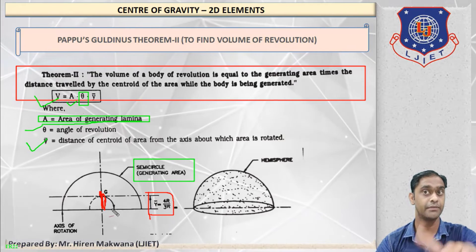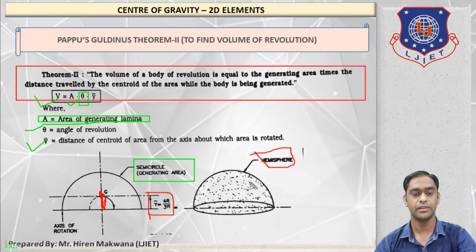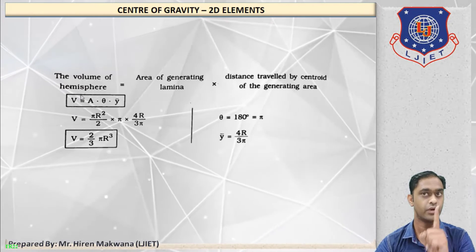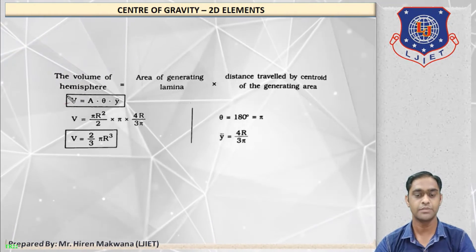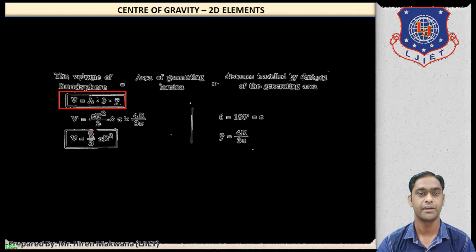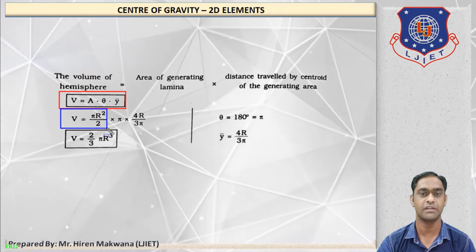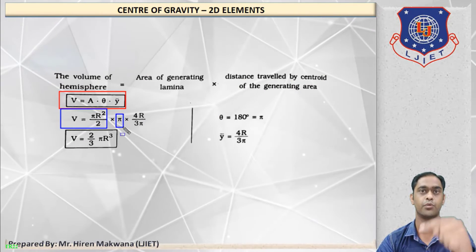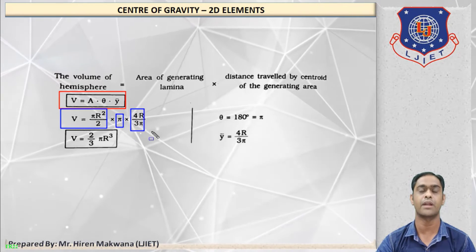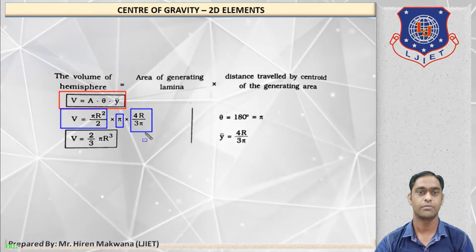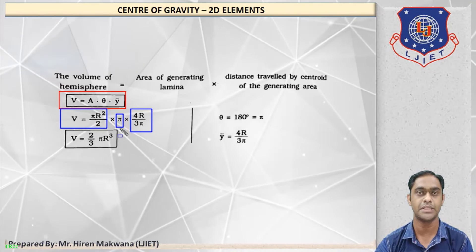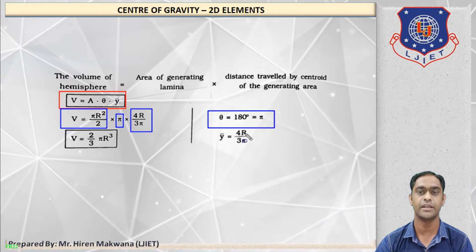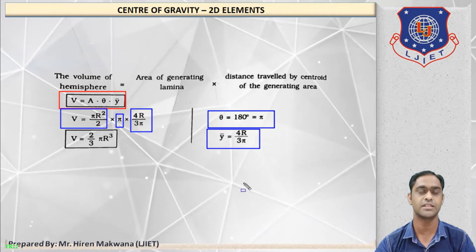If we revolve the semi-circular area up to 180 degrees (π radians), we will get a hemisphere. Applying the formula V = A·θ·ȳ: A = πr²/2, θ = π (180 degrees), and ȳ = 4r/3π. By simplification, the volume of the hemisphere equals (2/3)πr³.